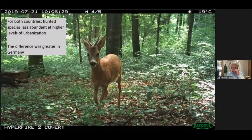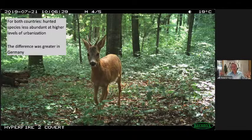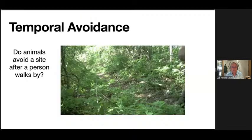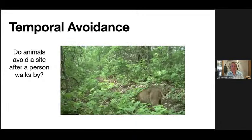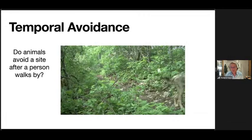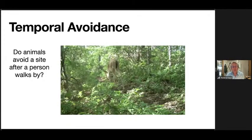Meanwhile in German yards, red foxes go crazy — tons of pictures of them — along with stone marten, red squirrel, and badger. Wild boar, a heavily hunted species, had not a single picture in German yards. This supports our hypothesis that hunted species avoid yards due to fear. At a larger landscape scale, hunted species were less abundant at higher urbanization levels in both countries, but the difference was much stronger in Germany.